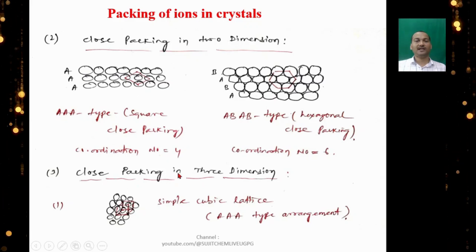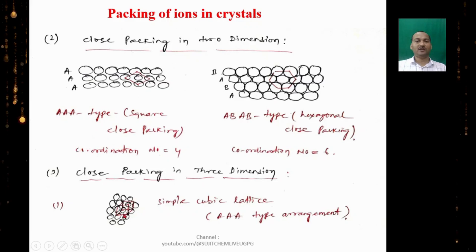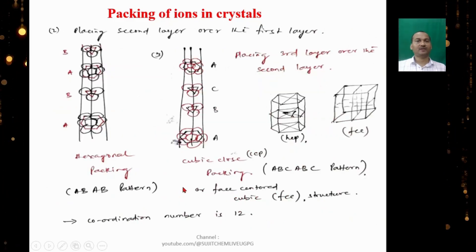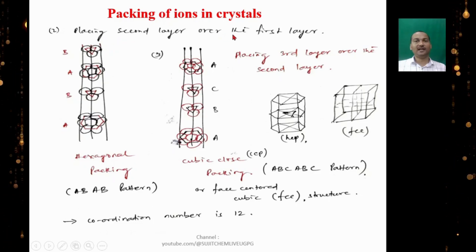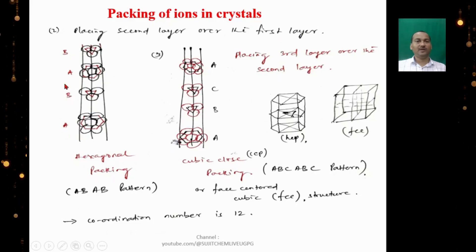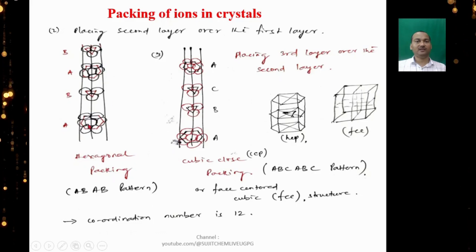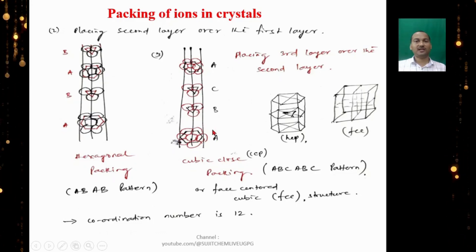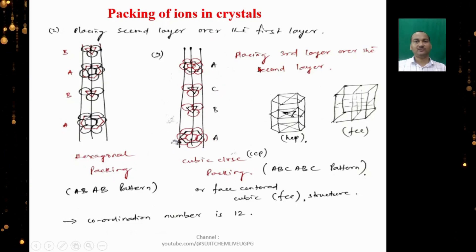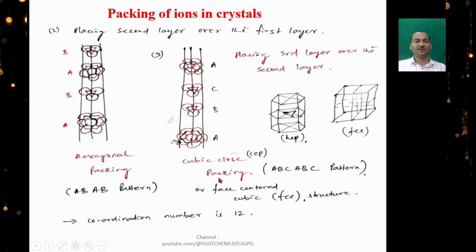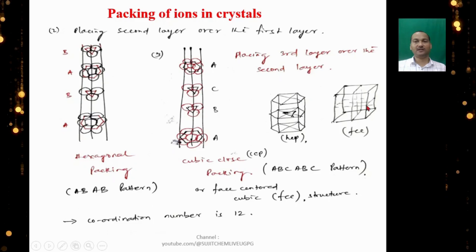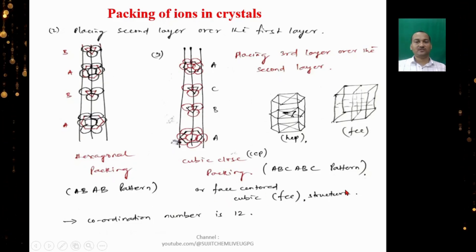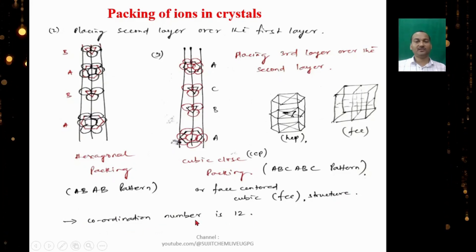Close packing in three dimensions leads to a simple cubic lattice, which is an AAA-type arrangement. Placing a second layer over the first in an ABABAB pattern gives hexagonal close packing (HCP). Placing a third layer in an ABCABC pattern gives cubic close packing, also known as face-centered cubic (FCC) structure. In both HCP and FCC cases, the coordination number is 12.